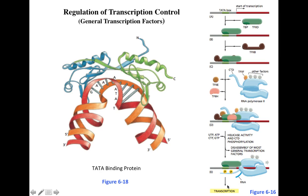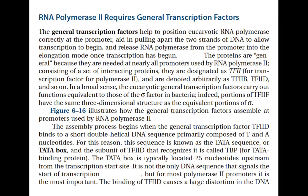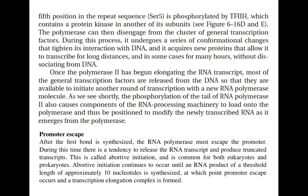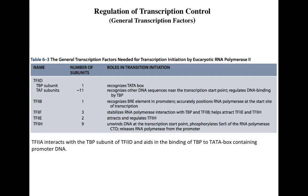Once the RNA polymerase reaches the threshold of roughly 10 RNA nucleotides, it is able to leave the promoter region — this is promoter escape — and enter the elongation phase. Notes have been added to the slides covering the same material discussed here, including additional information about promoter escape.